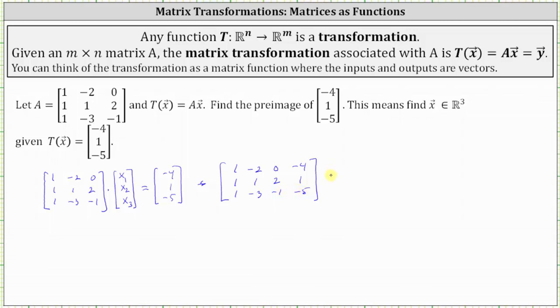The next step is to write the augmented matrix in reduced row echelon form, which I've already done to save time. Row one is one, zero, zero, two. Row two is zero, one, zero, three. And row three is zero, zero, one, negative two.